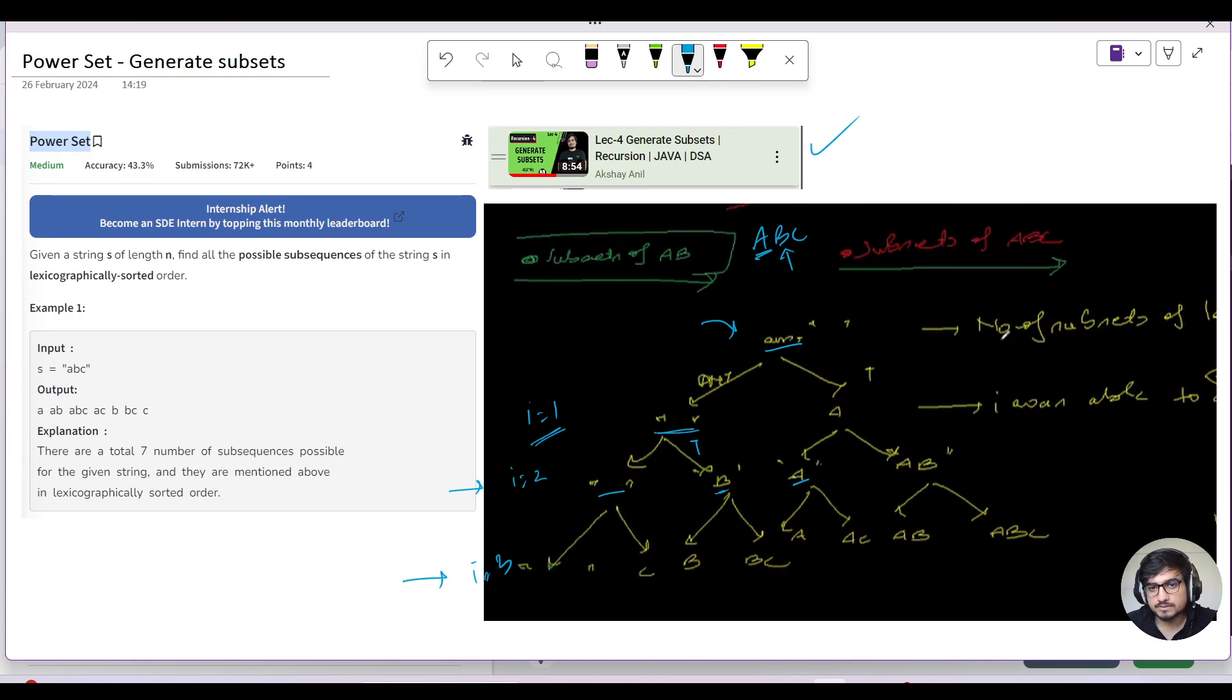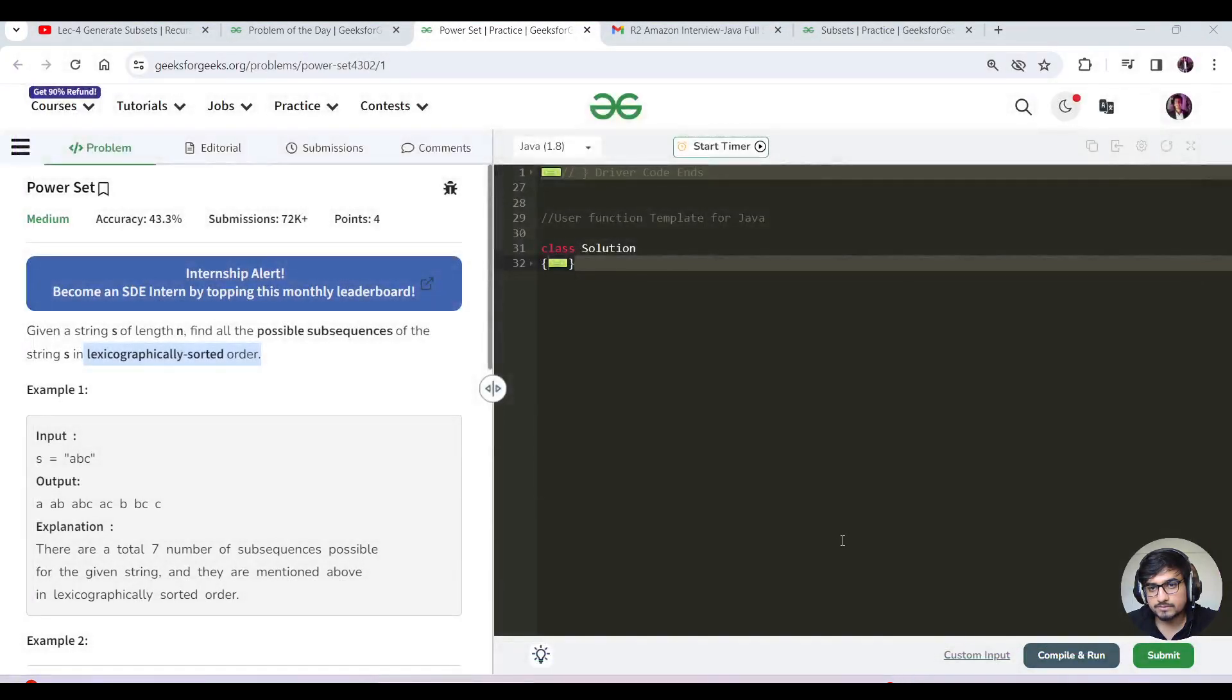Similarly for the third level of branching, we consider the third character. For empty string, if you don't take it remains empty, if you take it becomes 'c'. For 'b', if you don't take it remains 'b', if you take the third character 'c' it becomes 'bc'. For 'a', if you don't take it remains 'a', if you take it becomes 'ac'.